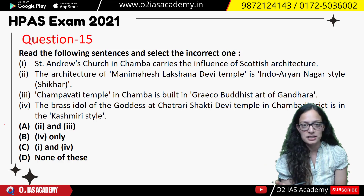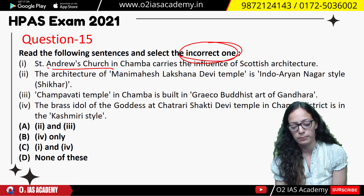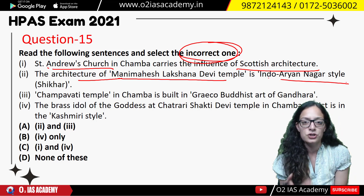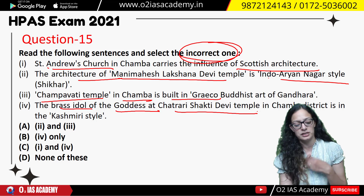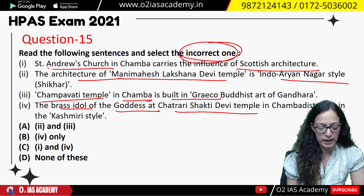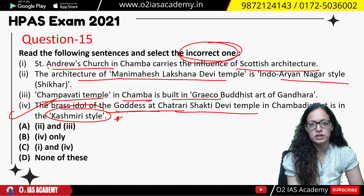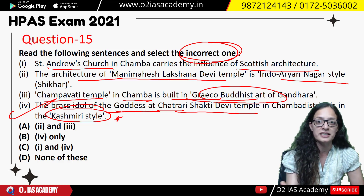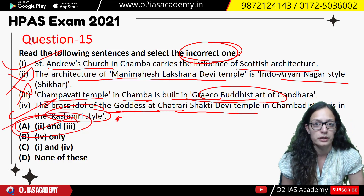Question 15 was about architecture — tougher level — asking for incorrect statements. First: St. Andrews Church in Chamba carries Scottish architecture influence — correct. Second: Mani Mahesh Laxhana Devi Temple is built in Indo-Aryan Shikhara style — incorrect. Third: Champavati Temple in Chamba is built on Greco-Buddhist art of Gandhara — incorrect (Champavati Temple was built very early; it has no Buddhist influence; the queen's name was Naina Devi). Fourth: Brass idol of Goddess at Chhatrari Shakti Devi Temple in Chamba is in Kashmiri style — correct. Hence the answer is second and third only.